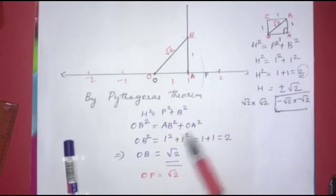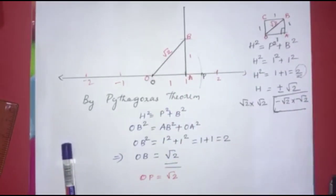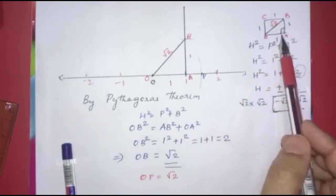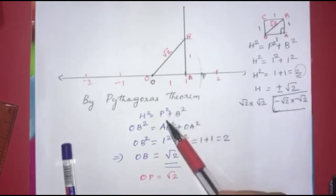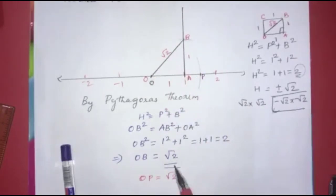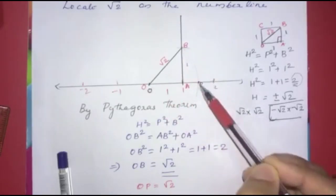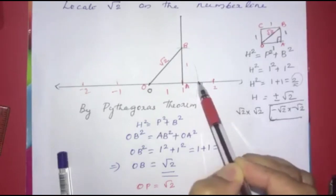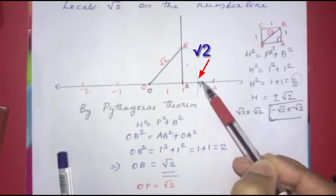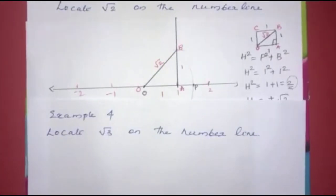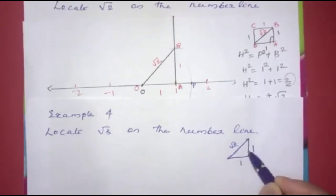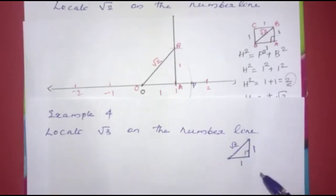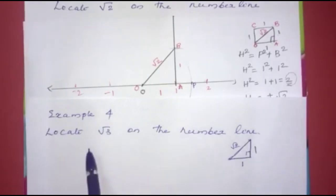Now we mark root 2 on the number line. OP = root 2. We make a base of 1 unit, then root 2. With 1 unit as the base, we make a right-angle triangle. The hypotenuse is root 2. We draw an arc with radius root 2, and the arc intersects the number line. That is how we mark root 2. Then to find root 3, we use base root 2.